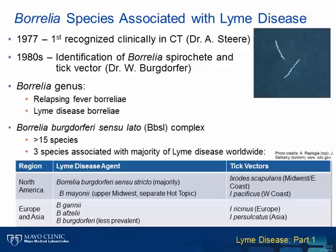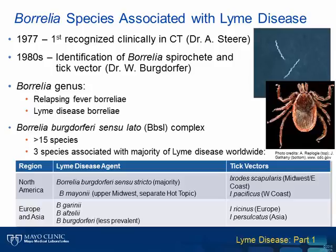All of the Lyme disease Borrelia species are transmitted by Ixodes species ticks, and in the United States this is primarily through Ixodes scapularis.